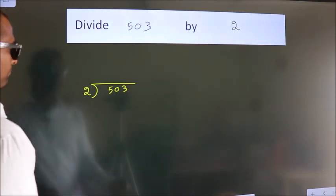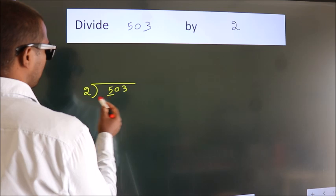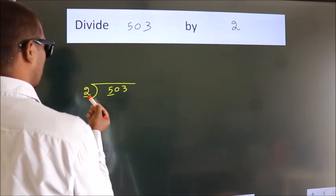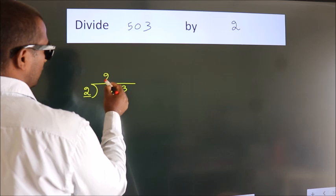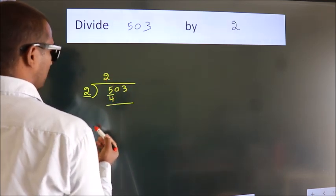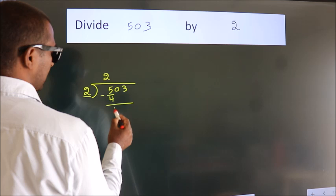Next, here we have 5, here 2. A number close to 5 in 2 table is 2 2s, 4. Now we should subtract. We get 1.